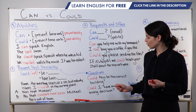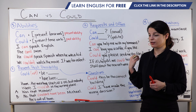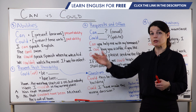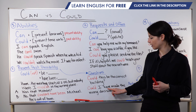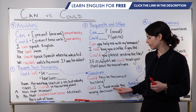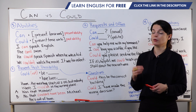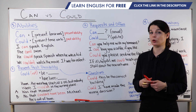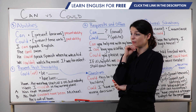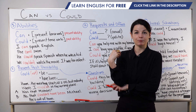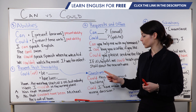One more example: Could I have made the wrong decision? The speaker is thinking about something in the past. Could I have made — we know this is a past expression because of this grammar. Have made shows us this is something the speaker chose to do in the past. Could I have made the wrong decision? The speaker could be thinking out loud or asking someone else for an opinion.